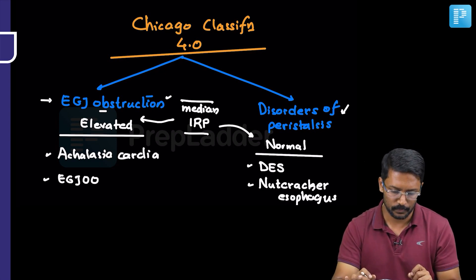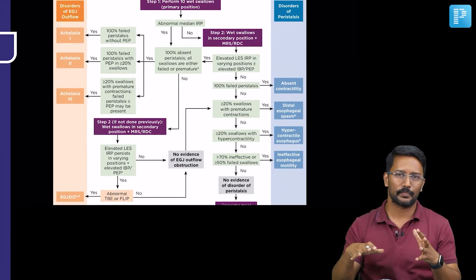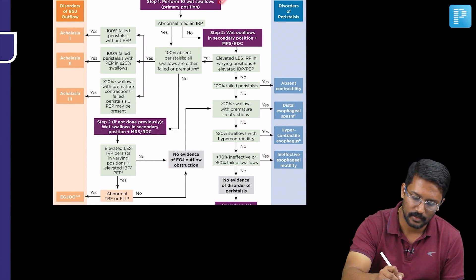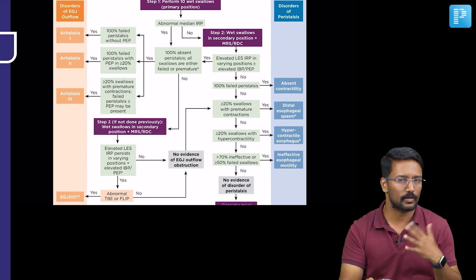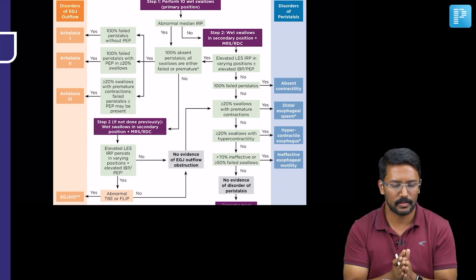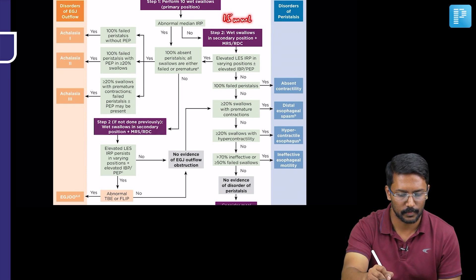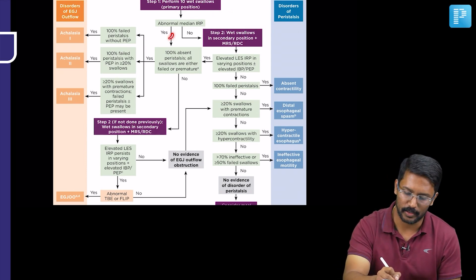I will also take you through the original document from the Chicago classification. This is how the manometry proceeds. So you ask the patient to do 10 wet swallows, wet swallows means he is asked to swallow water or some other liquid, that is why we call this wet swallows. So then when 10 wet swallows, we will see the median IRP, normal median IRP is 15 millimeters of mercury or less than that. When the median IRP is abnormal or elevated,